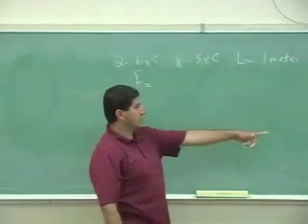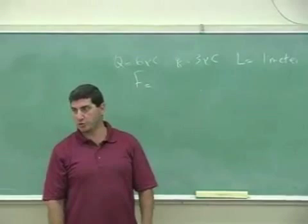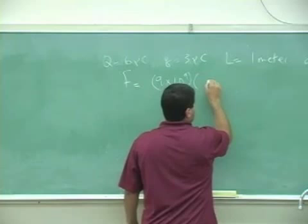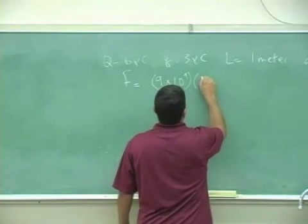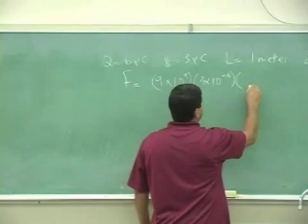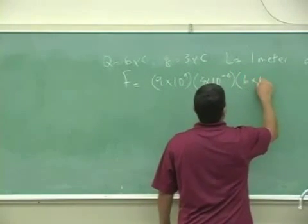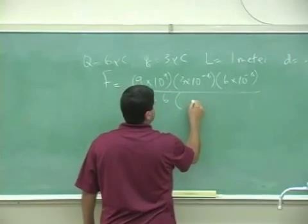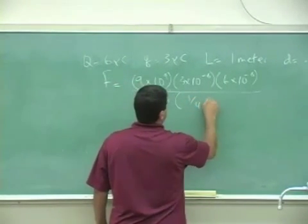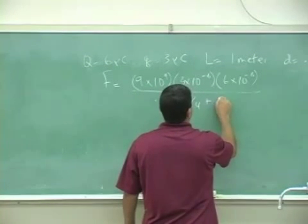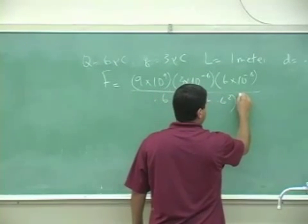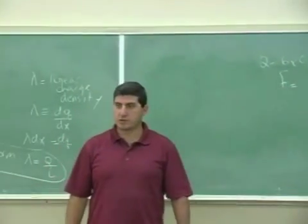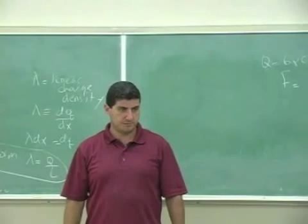So for now, since we've already done the indefinite integral, let me just put all the numbers in. 9 times 10 to the 9. Q is 3 times 10 to the minus 6. Big Q is 6 times 10 to the minus 6. d is 0.6. 1 over 4 plus d squared to the 1 half. So get that. Tell me what you get. Put that all in.